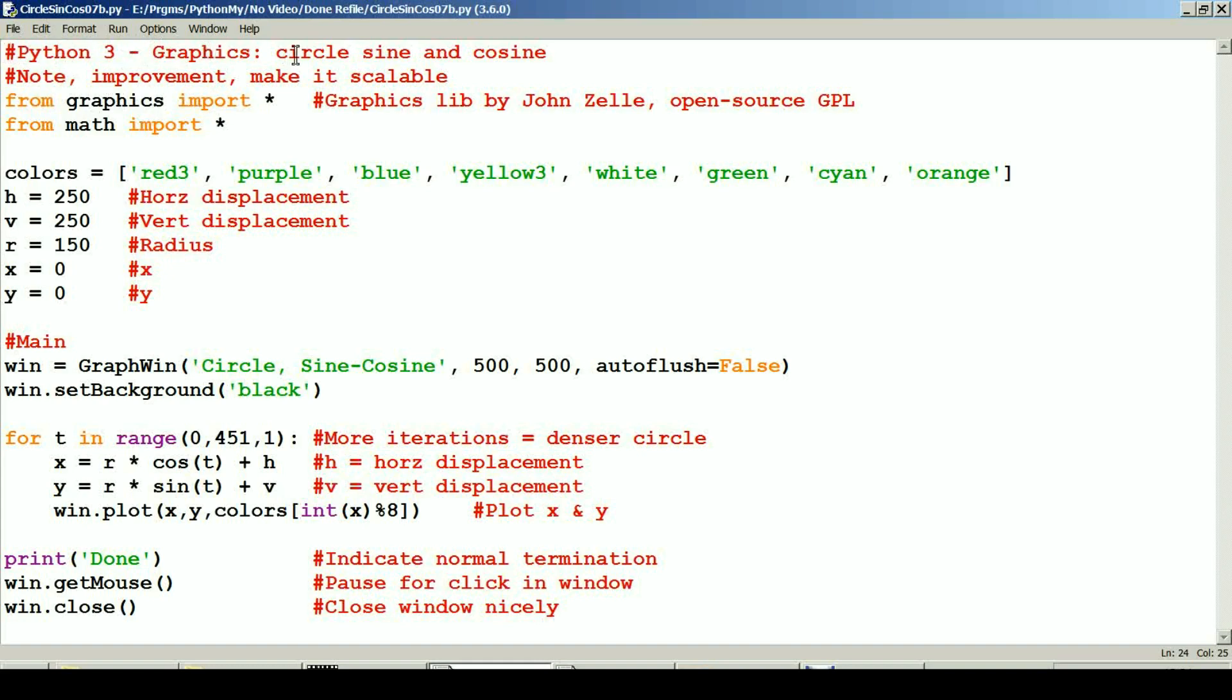This is Python 3. This is a graphics program. It creates a circle by brute force. By using sine and cosine, we're not going to use any built-in functions to create a circle. One of the improvements I have, I have a note here to myself, to make it scalable.